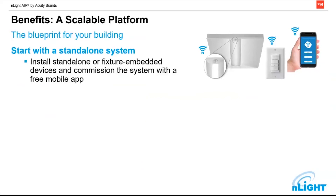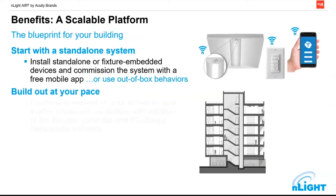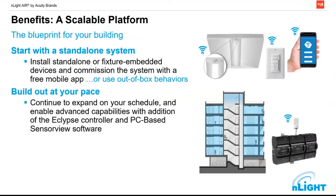We can start with a standalone system right out of the box. The fixtures are going to dim and work based on the occupancy sensor already in that light fixture. And then we can add on to it and broaden out and build out our space from there.